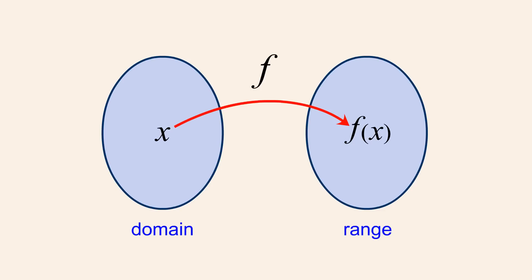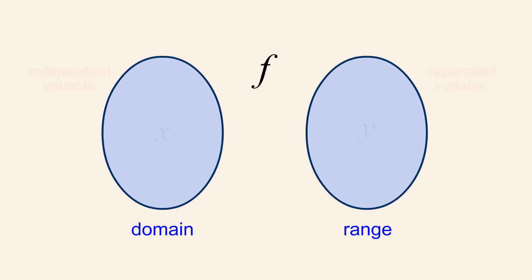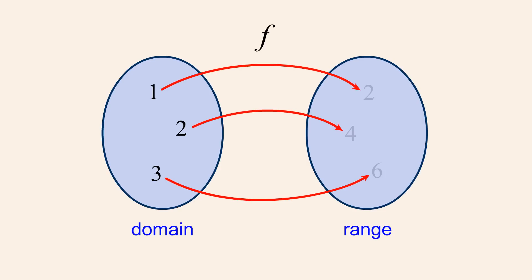If we assign the output value to the variable y, we say that y is the dependent variable since its value depends on the value of the independent variable x. We can think of the function as mapping values in its domain to values in its range.